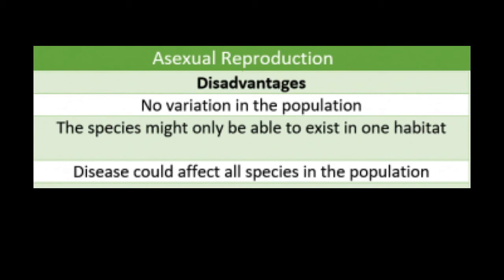And because there is no genetic variation, what makes one individual of the population weak makes all the other members of the population weak. The same can be said about diseases — what affects one organism in that species will affect every single other organism equally because they will all be genetically identical. So if one member is susceptible to a particular type of virus, fungus, or bacterial disease, then every single member of that population would be equally susceptible. This has the potential of wiping out entire populations when a new disease appears or when the habitat changes. This lack of genetic variation can significantly reduce the survival ability of asexual reproducers.